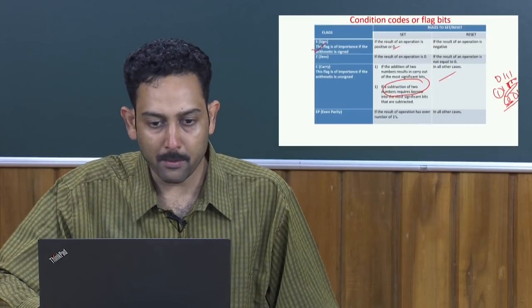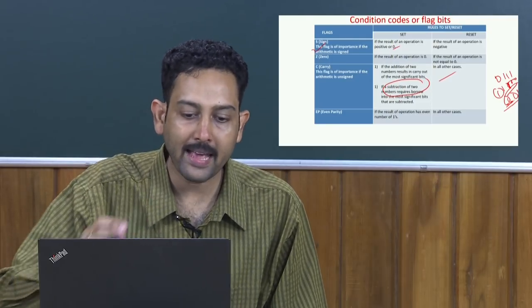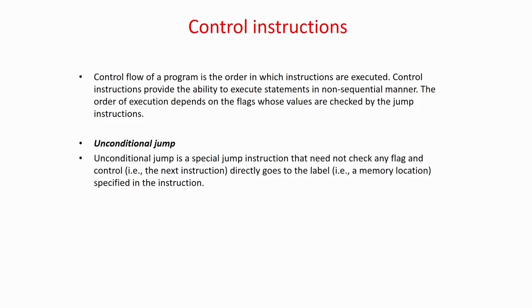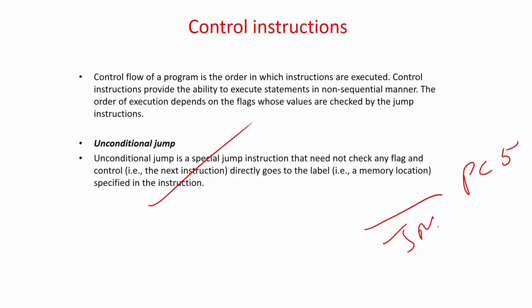The most important flags for everyday use are: sign flag, zero flag, carry flag, parity flag, overflow flag, and equality flag. Now we will look at some typical control instructions based on flags. The first and simplest is the unconditional jump: if the PC is at memory location 5, you can say 'jump 50' — without looking at anything, the program counter becomes 50 and whatever instruction is at memory location 50 will be executed. That is a very simple unconditional jump instruction; no flags are required.